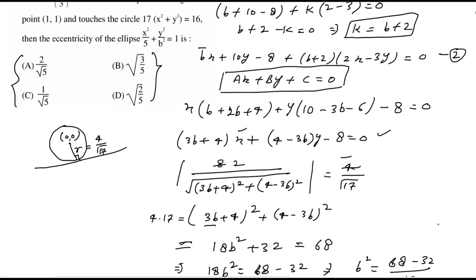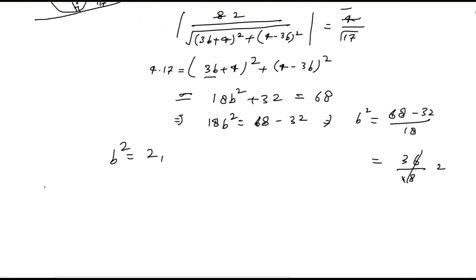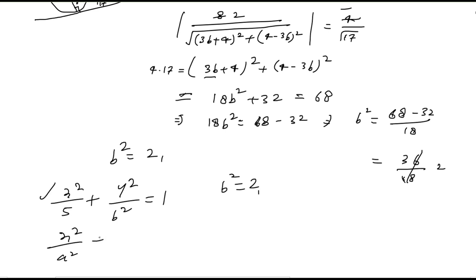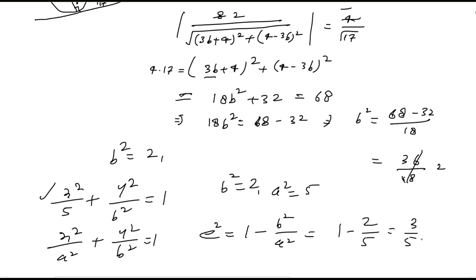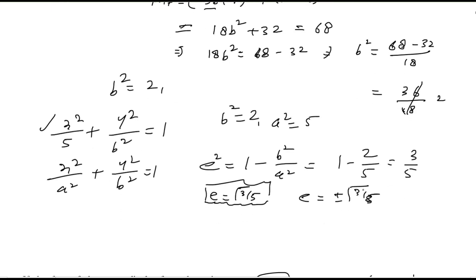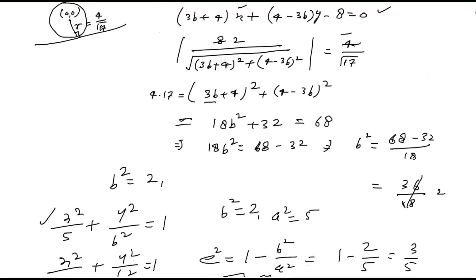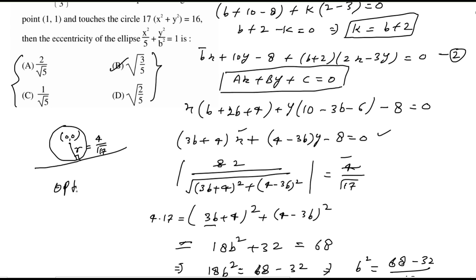Now finding the eccentricity of the ellipse x²/5 plus y²/b² equal to 1, with b² equal to 2. Comparing with the standard ellipse x²/a² plus y²/b² equal to 1, we have a² equal to 5. So e² equals 1 minus b²/a² equals 1 minus 2/5 equals 3/5, giving e equal to root(3/5). Since eccentricity is always positive, we discard the negative value. Therefore the eccentricity is root(3 by 5), and option B is the correct answer.